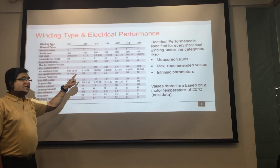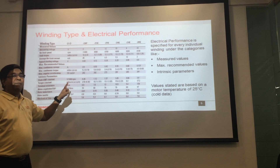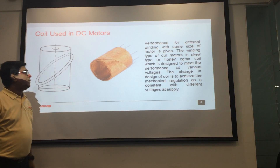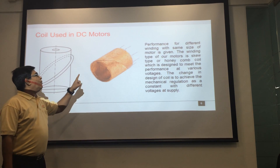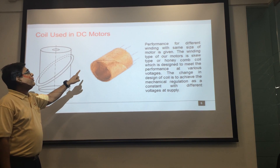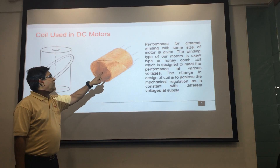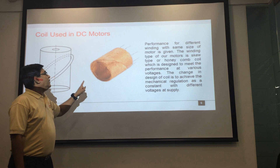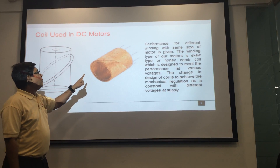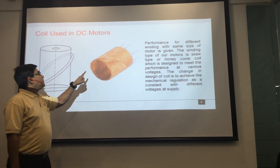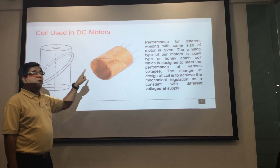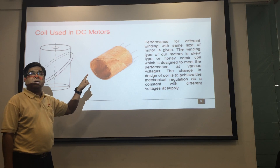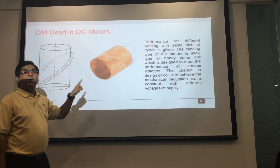These values are specified at 25 degrees Celsius ambient temperature of winding, also known as cold data. The coil or winding is shown here to understand. The coil we manufacture is a skew type coil or helical wound coil, also known as a honeycomb wound coil. This coil is so designed that we achieve the performance at different voltages without changing the mechanical configuration of the same motor or model.